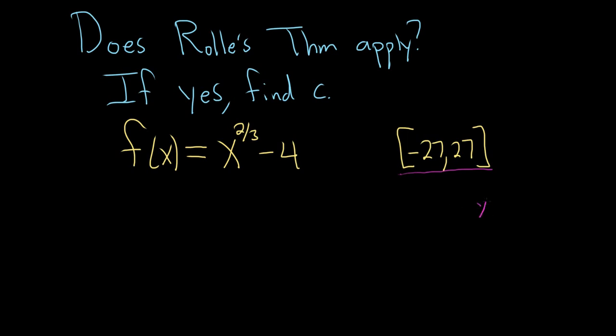So x to the two-thirds by itself looks like this. It's a cusp. This little piece here is called a cusp. It looks like a little bird, and it's not differentiable at zero in this case. So x to the two-thirds minus four is a cusp and it shifted down by four like this. This is what the graph of our function f looks like.